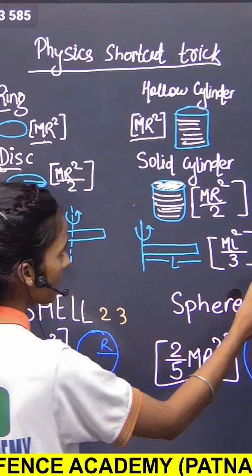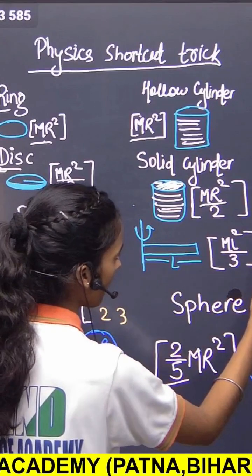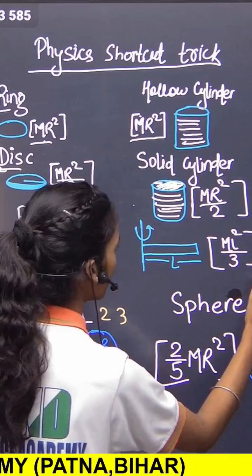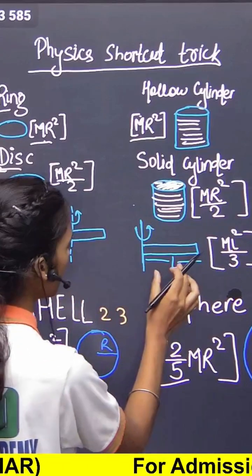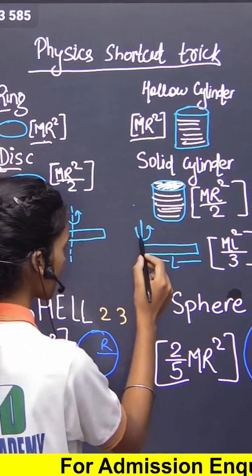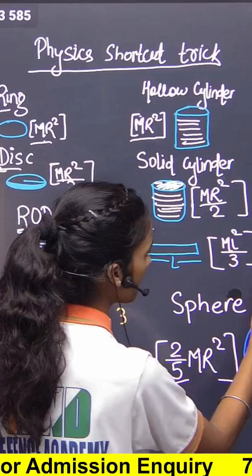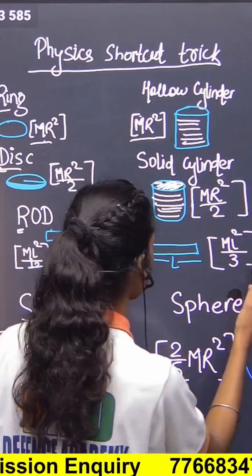Rod. R for rods, so we can write R as 1 and 2. So we can divide ML square by 12. And when rod initial point is coming as a line segment, then we can add 1 and 2, so 3. ML square divided by 3.